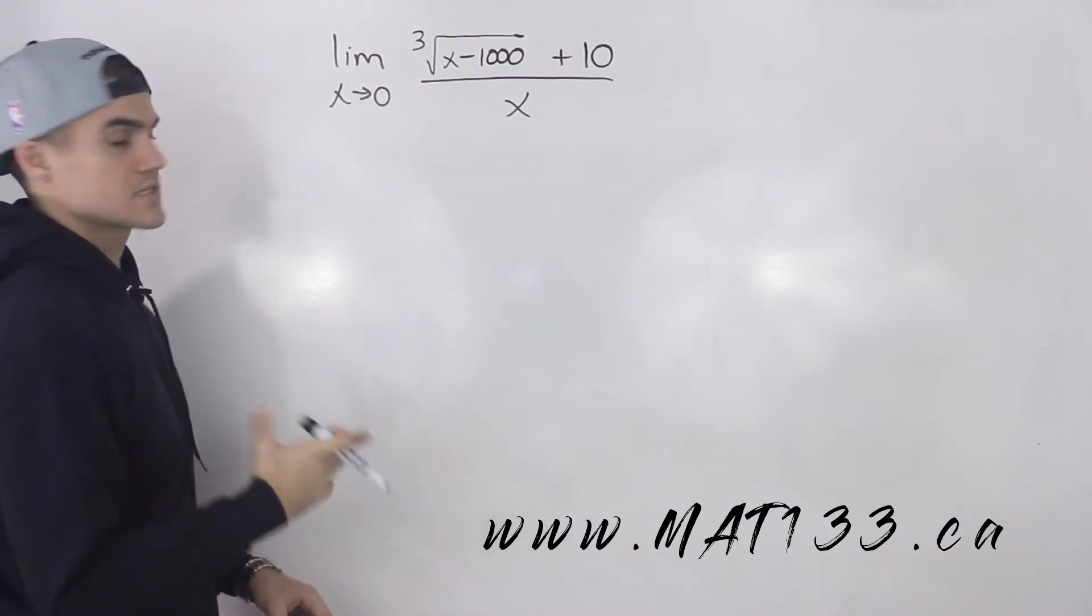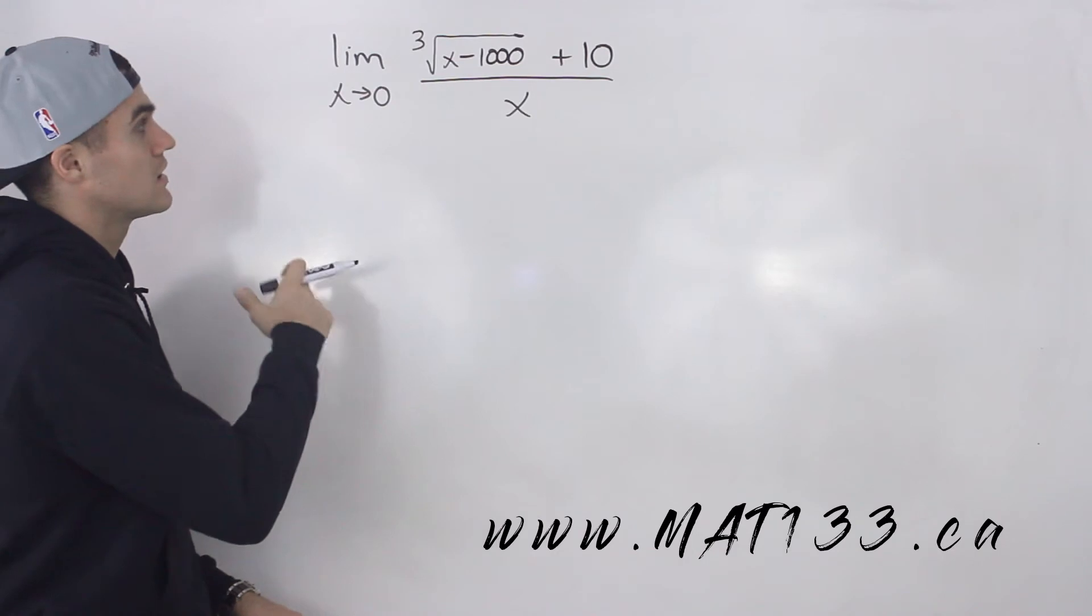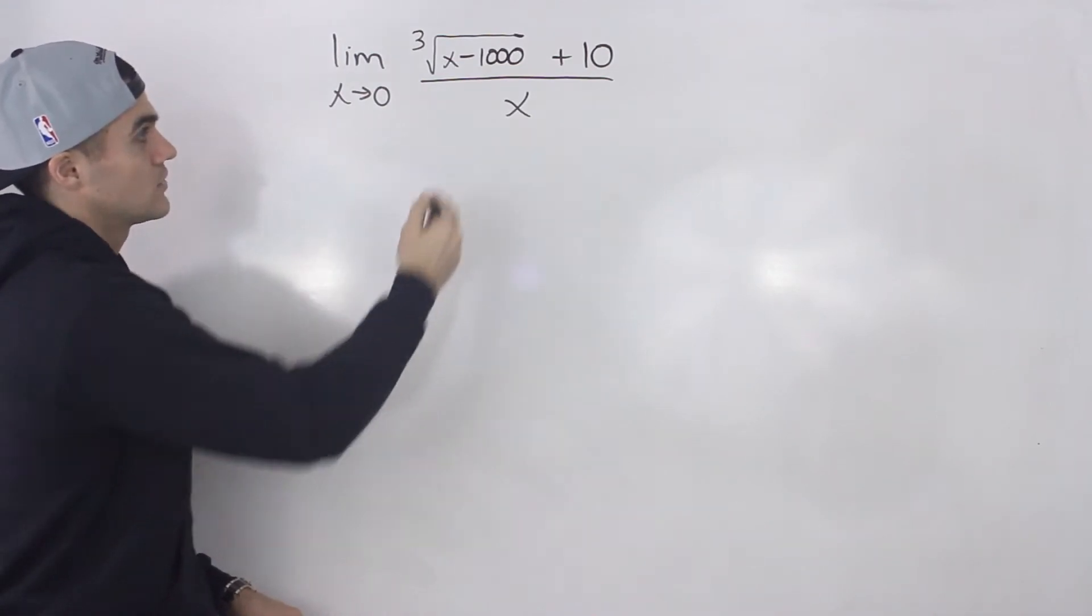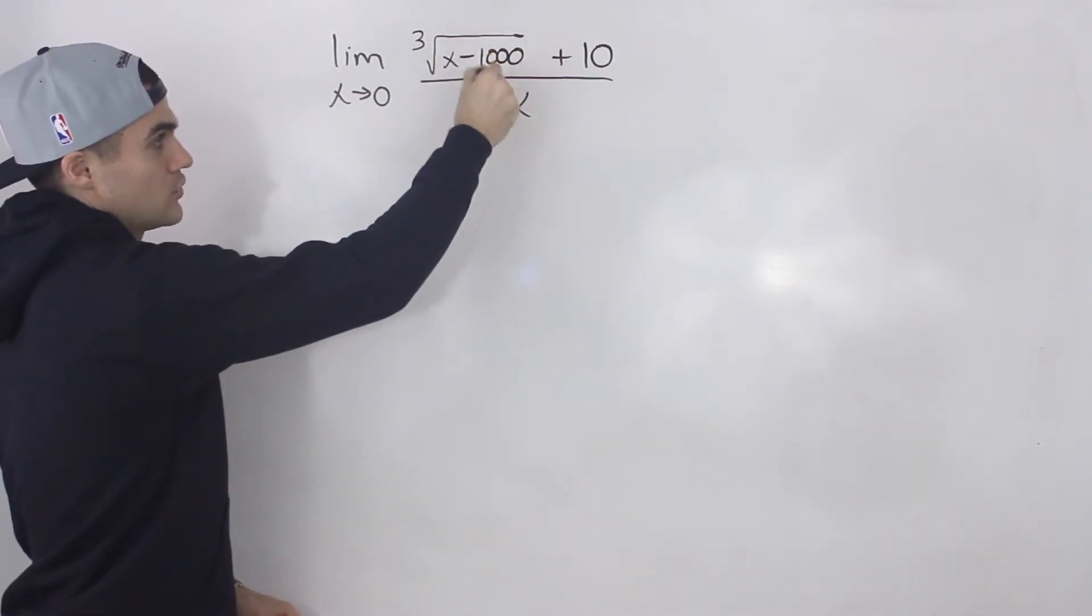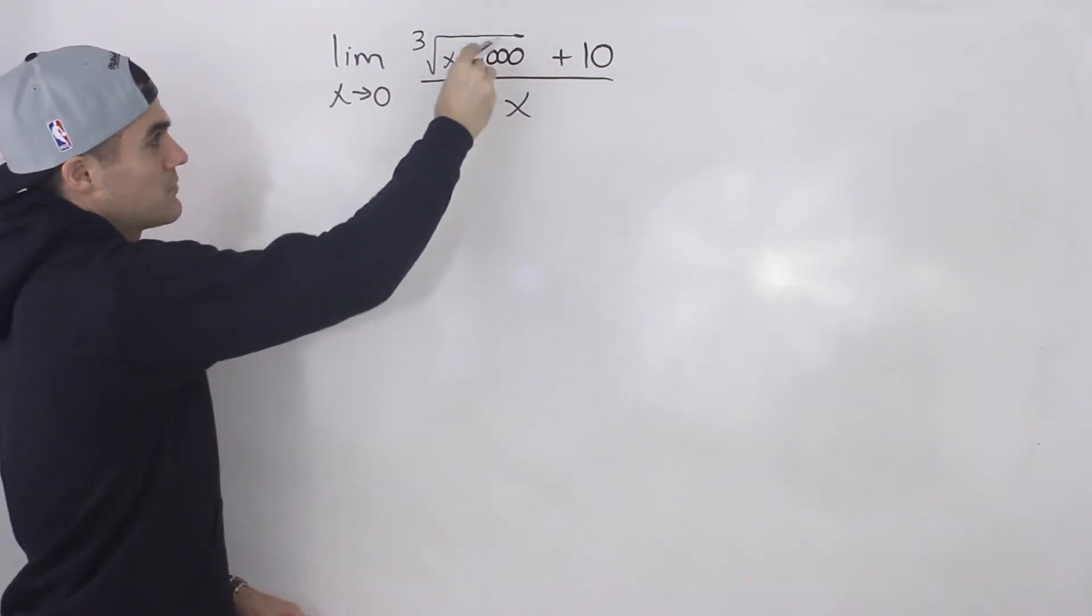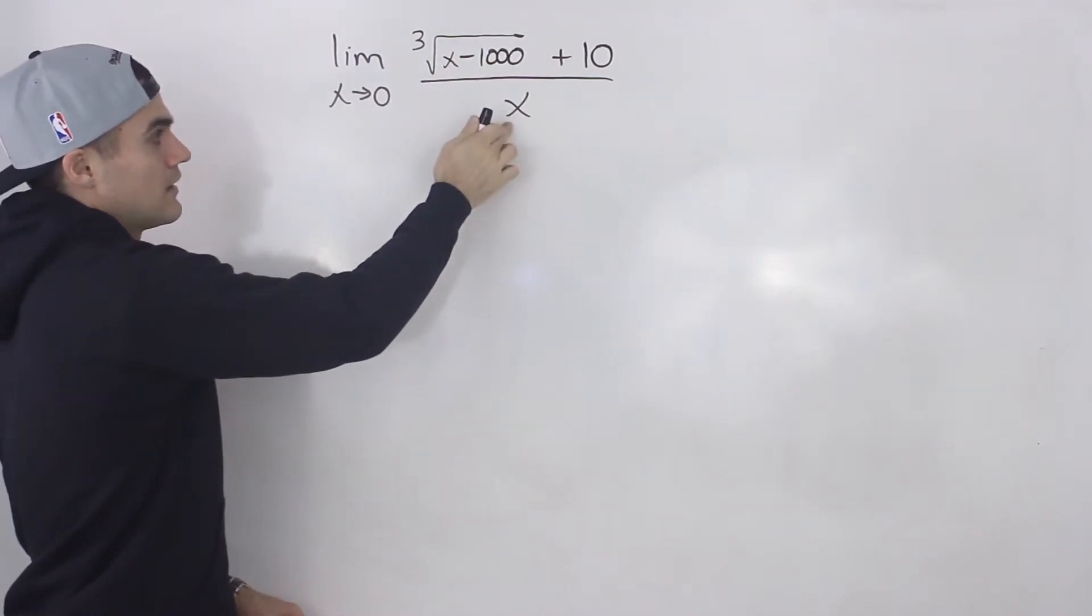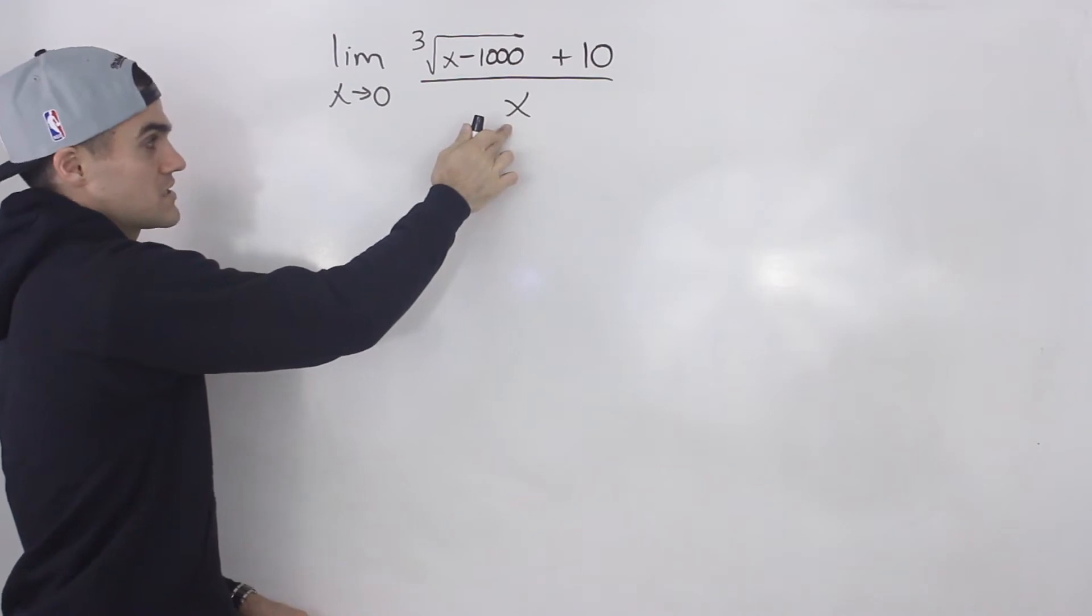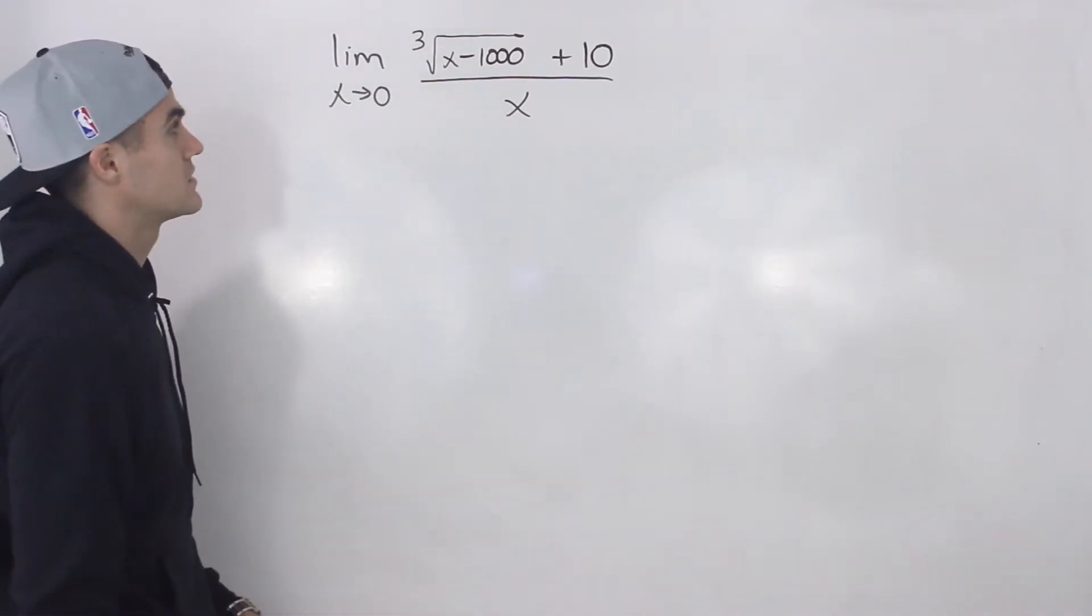First thing you always want to check with limits: can you make a direct substitution? If you plug in 0 for x, you'll get 0 in the numerator and 0 in the denominator. It doesn't really matter what you get in the numerator—if the denominator is ever equal to 0, you can't make a direct substitution.